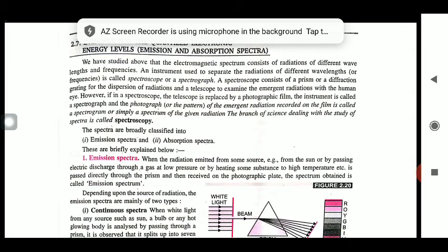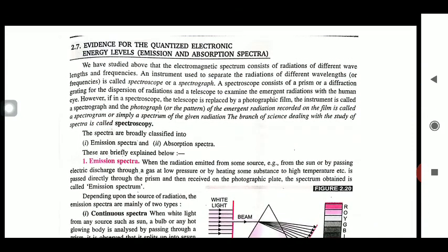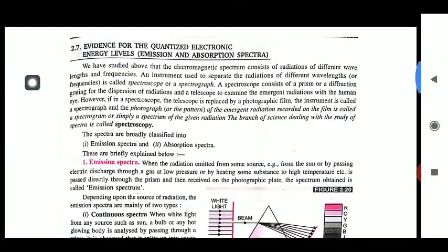Good morning everyone. Today we are going to discuss the concept of spectroscopy. Spectroscopy means the study of the spectrum. The term spectrum is familiar to you — whenever any light like sunlight passes through a prism, it scatters into its components, the seven colors. This scattered picture of these seven colors, the components of sunlight, is known as the spectrum, and the study of this spectrum is known as spectroscopy.